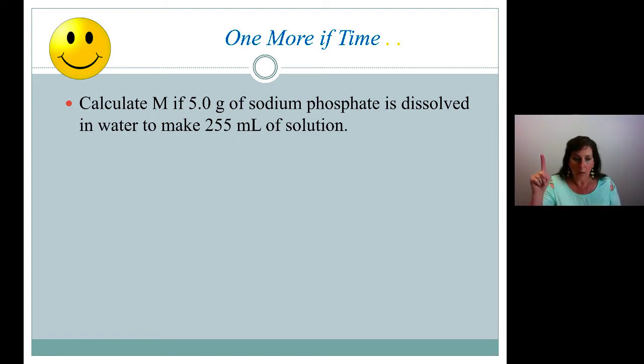It's plus 1. What's the charge on phosphate? Minus 3. So we have a plus 1, minus 3 combination. That doesn't add up to 0. What do I need to make that add up to 0? Okay. I'm going to need a plus 3 to go with the minus 3. That means I need 3 sodiums. So it's going to be Na3PO4.